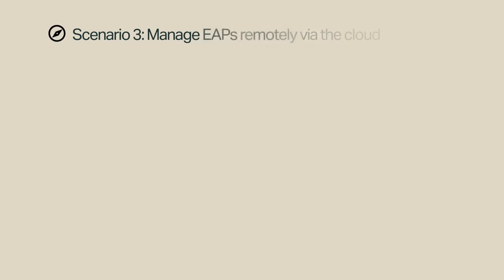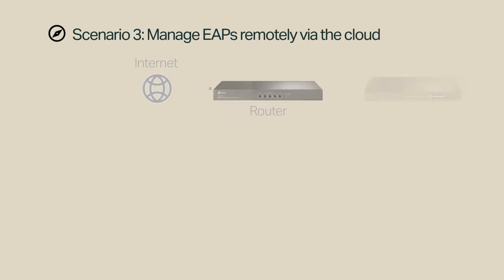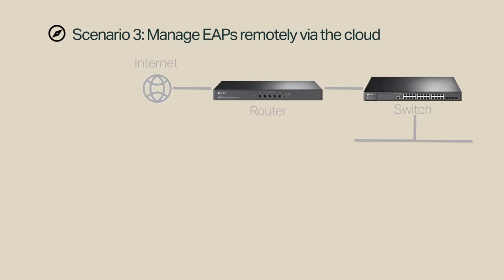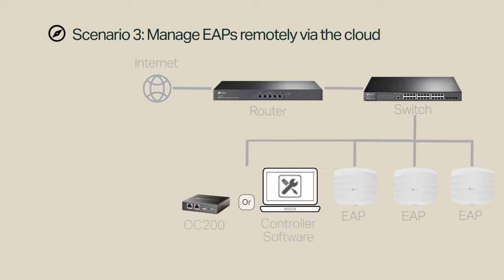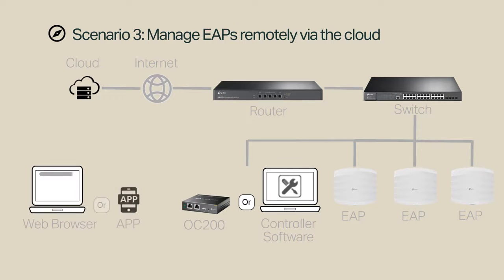To manage EAPs remotely via the cloud, connect your router to the Internet, a switch to the router, and EAPs to the switch. Connect your controller — either an OC200 or a PC with controller software — to the local network. You can login to your TP-Link ID from any place so long as you have access to the Internet, and then use either a web browser or the Omada app to manage EAPs remotely via the cloud.